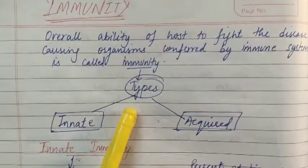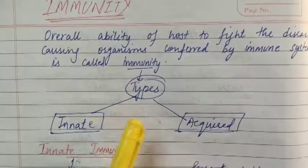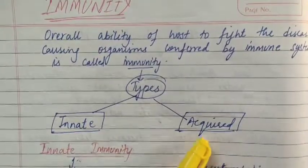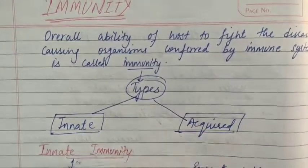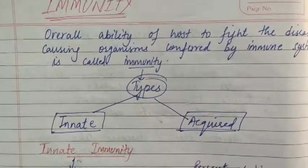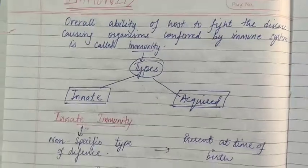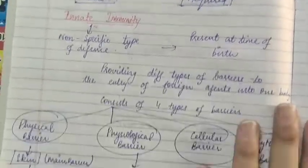The types of immunity are two types: one is innate immunity and one is acquired immunity. First of all, we will discuss innate immunity.